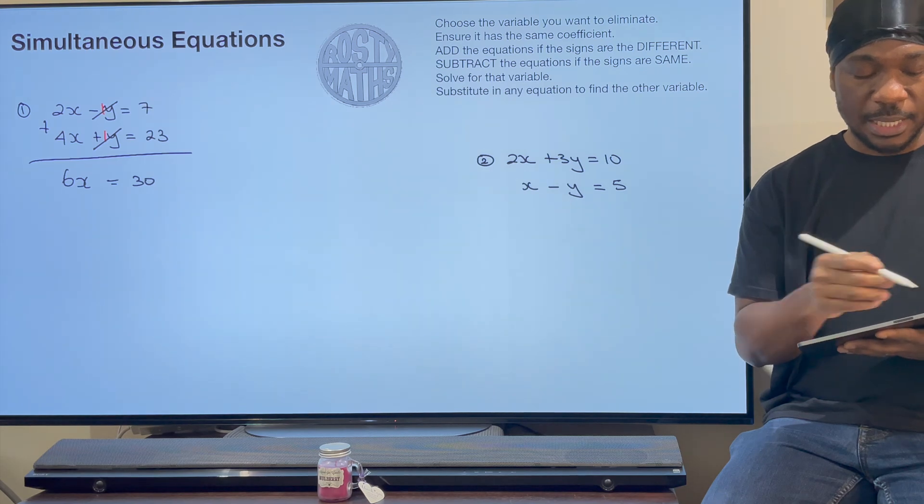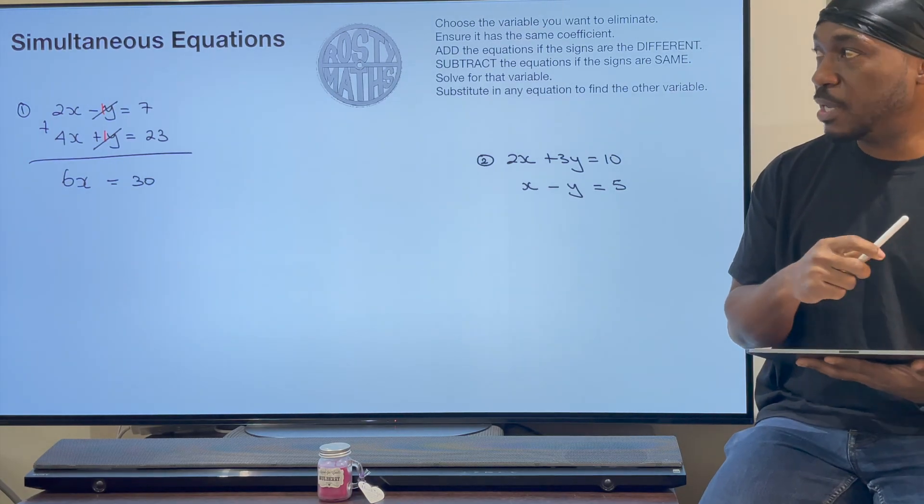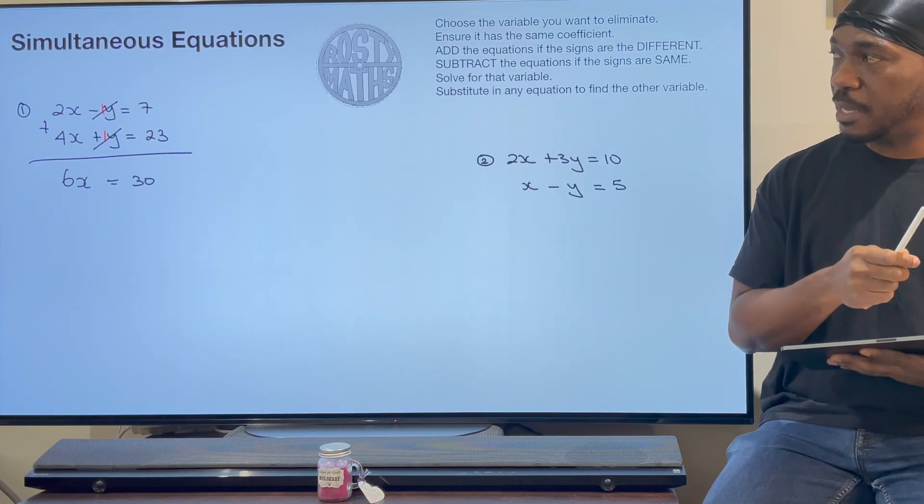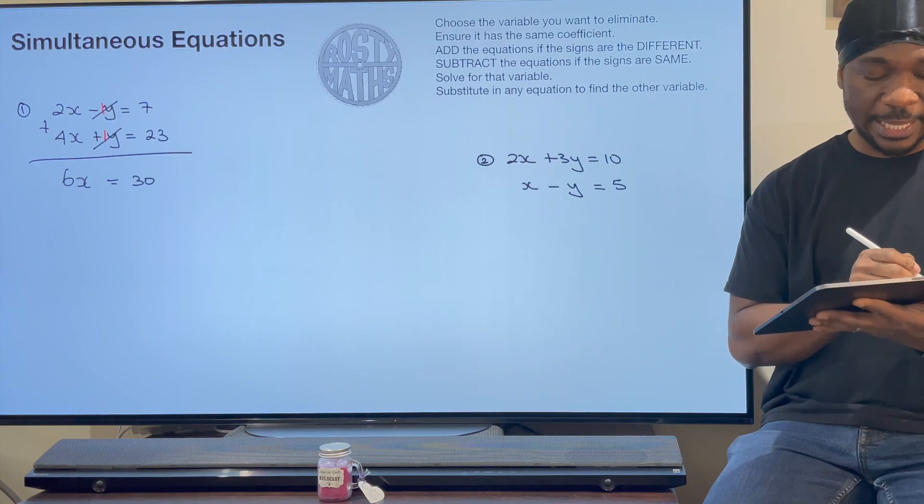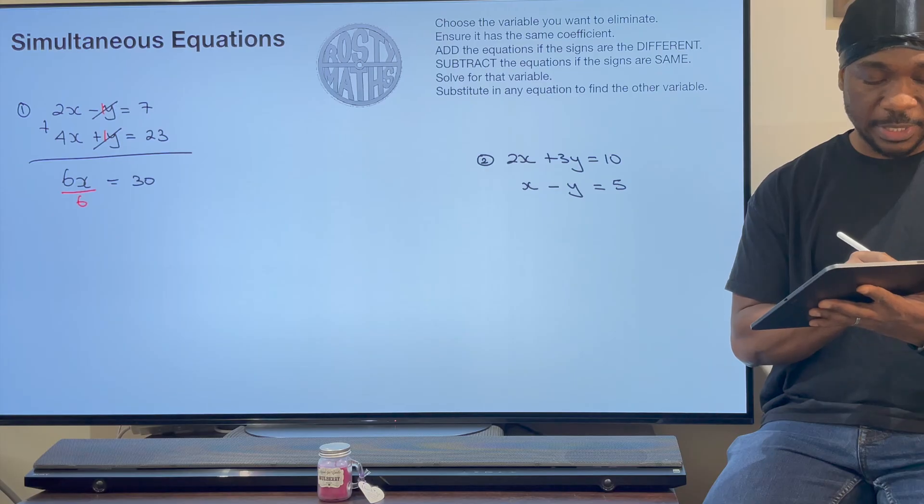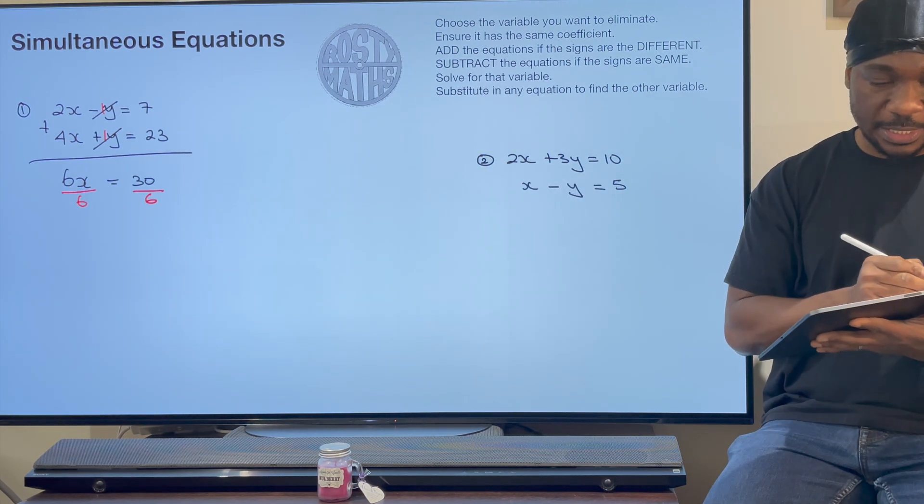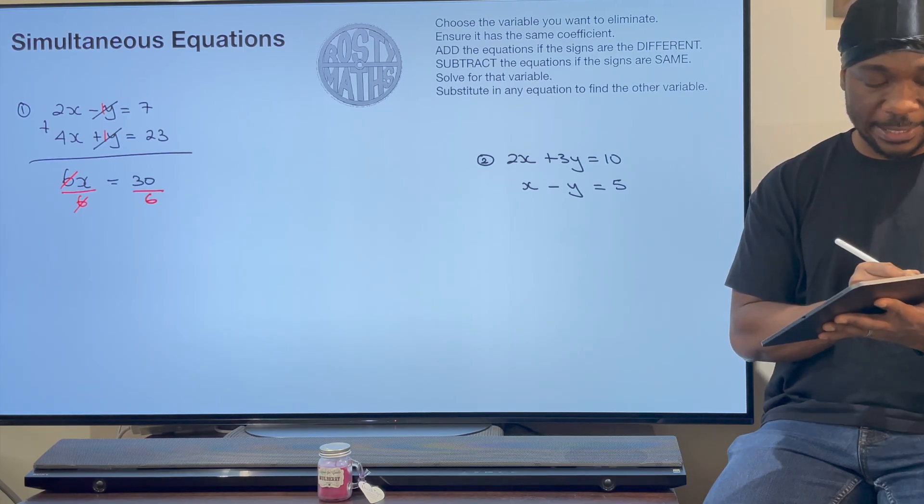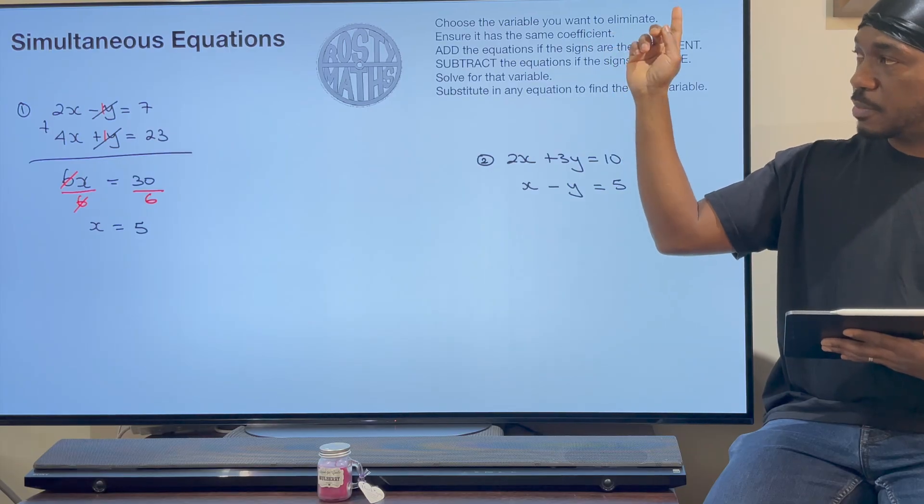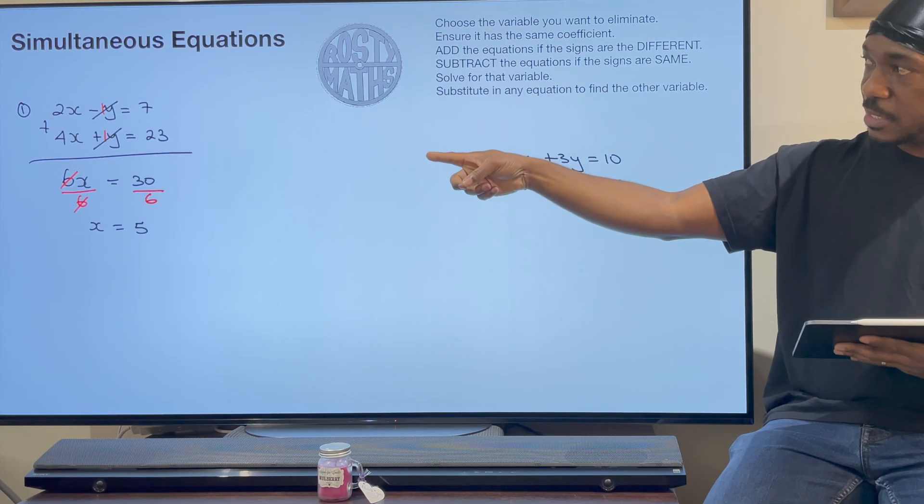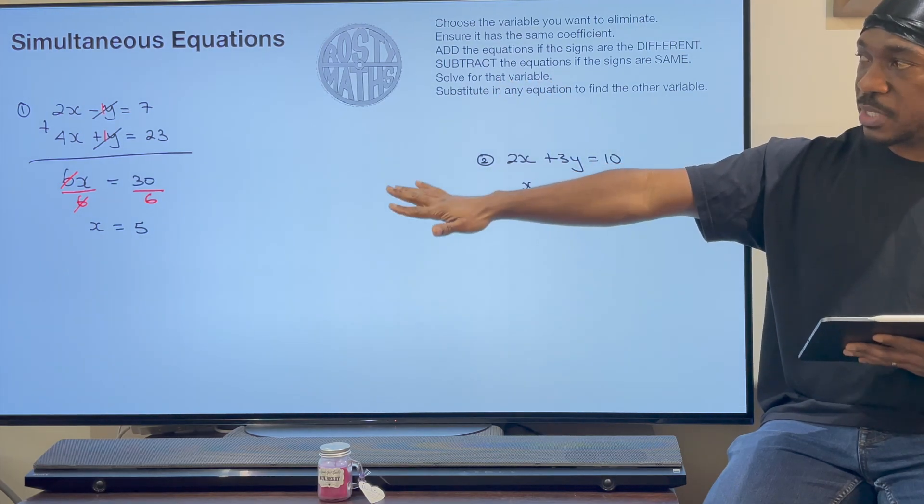Now I've got 6x equals 30 and I need to find what x is. I'm going to use my inverse operation to find what the x is. I need to get rid of this 6. So I am going to divide by 6 because right now the 6 is multiplying by x. The inverse or the opposite of multiply is divide. So I'm going to divide by 6, thereby cancelling out these two 6s. x is equal to 5. So we chose y, ensured it has the same coefficient, we added because the signs are different. Now we solved for that variable.